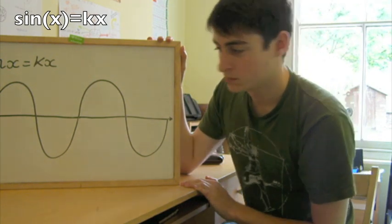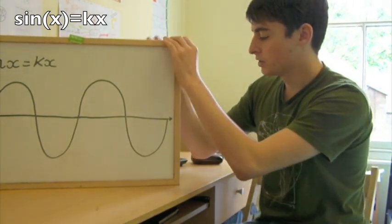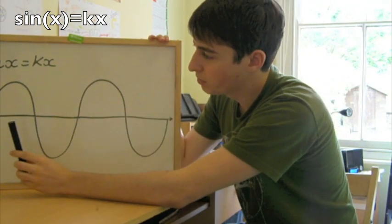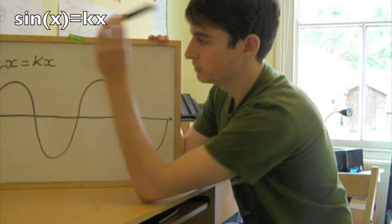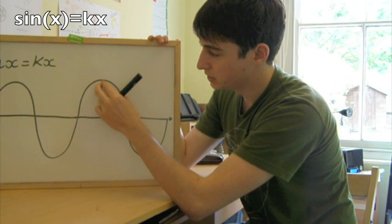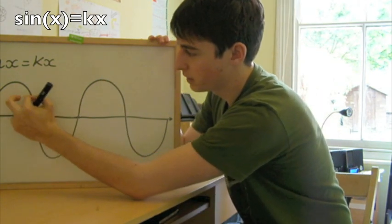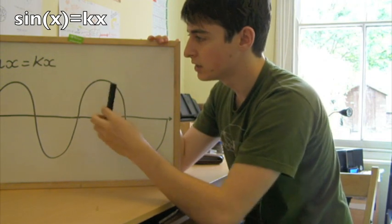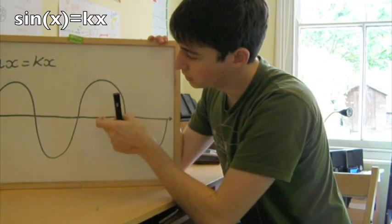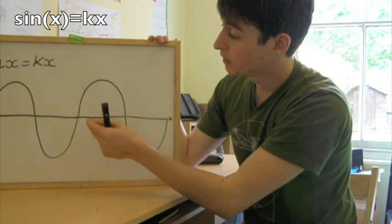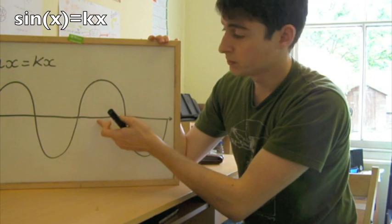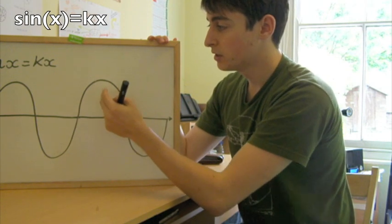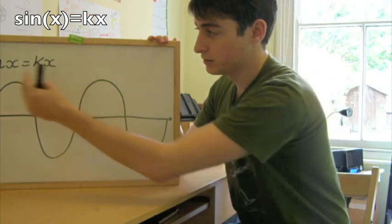But I think what you're supposed to do is just do it graphically. So kx is just a line gradient k. Then what you can do is establish that the only way you're going to get one solution in a positive k is if you set the gradient such that it just intercepts here. Ignoring the origin. That's the limit. So you can take the gradient, k is dy by dx. The peak is 1, and you know that the distance in the x direction is 2 pi plus pi by 2, so 5 pi by 2. So the limit in the positive k direction is going to be k between 2 over 5 pi.